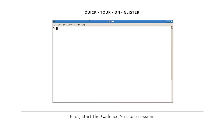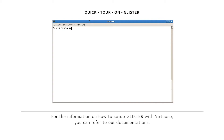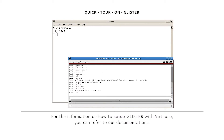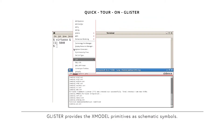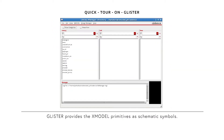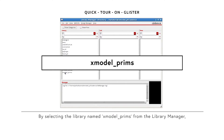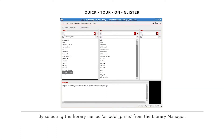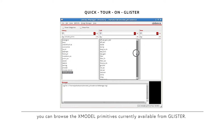Let me give you a quick demo on Glister with a small example. First, start the Cadence Virtual Suite session. For information on how to set up Glister with Virtual Suite, you can refer to our documentation. Glister provides the X-model primitives as schematic symbols. By selecting the library name X-model prims from the Library Manager, you can browse the X-model primitives currently available from Glister.